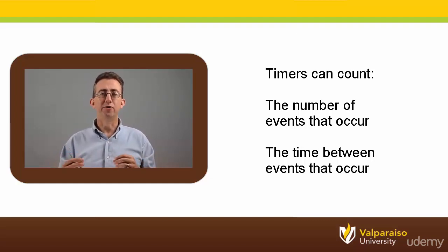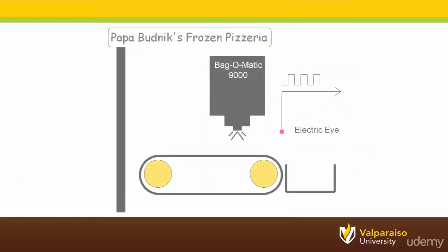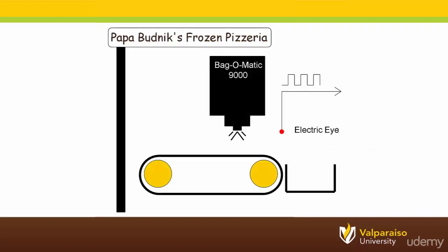Let's pretend that this job of being a professor doesn't really work out for me, and instead I decide to open up a factory that makes frozen pizzas. After the pizzas are made and frozen, they fall down through a chute and land on a conveyor belt. The pizzas then travel down the conveyor belt where they are magically zapped by the Bagomatic 9000 machine that I invented to wrap them up in plastic wrap.